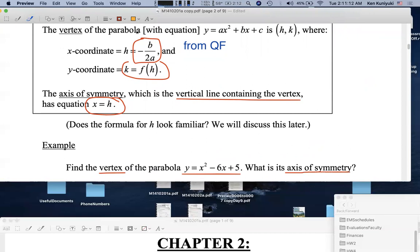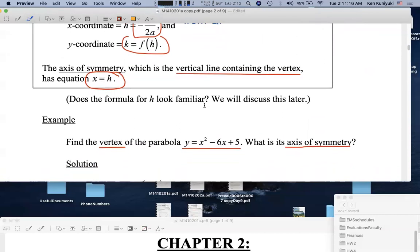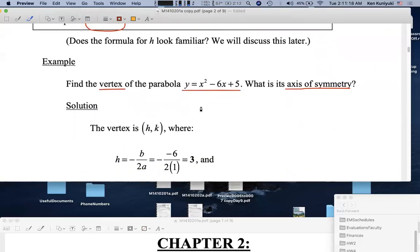So to find the vertex, let's use this QF type formula. The x-coordinate or h is given by this formula, the opposite of b over 2a. It might be helpful to indicate the various parameters. What are a, b, and c? A is positive 1. There's an implied 1 over here.